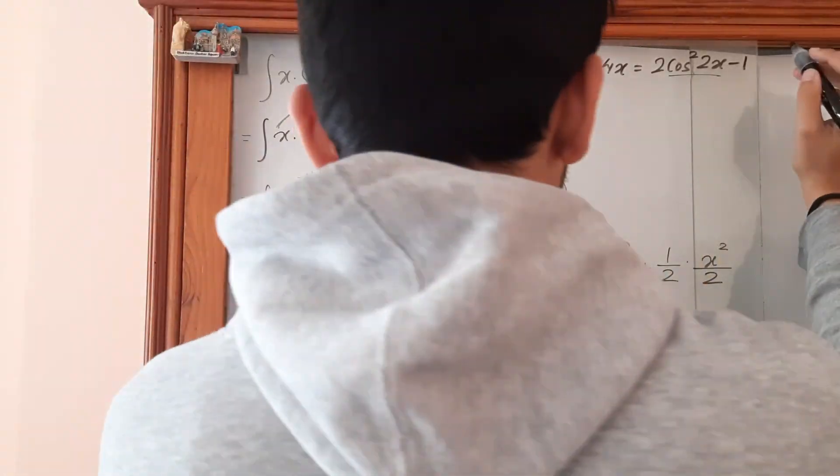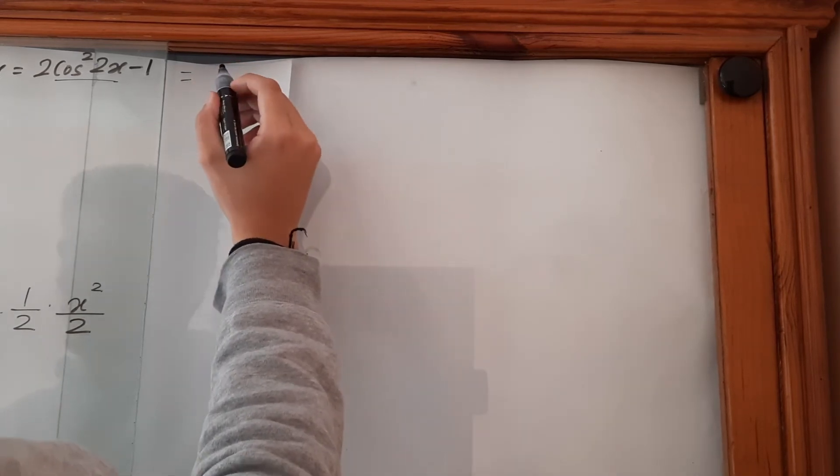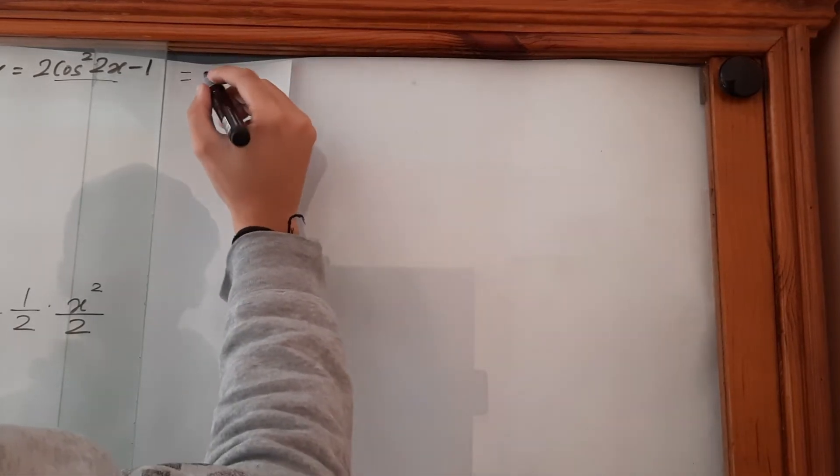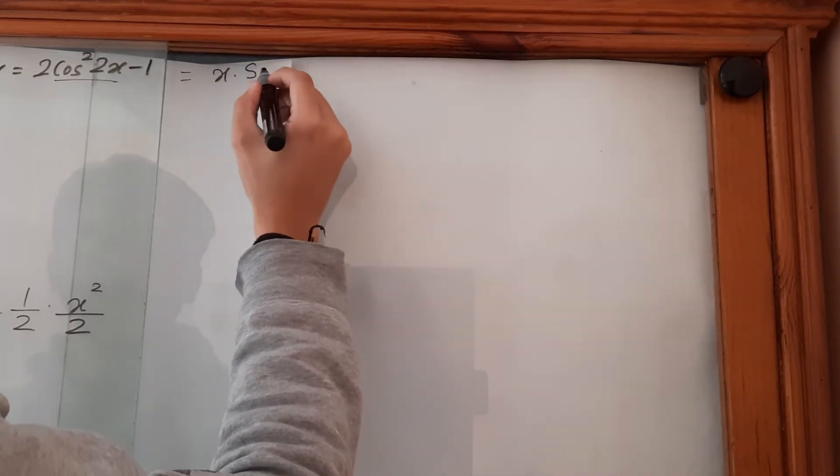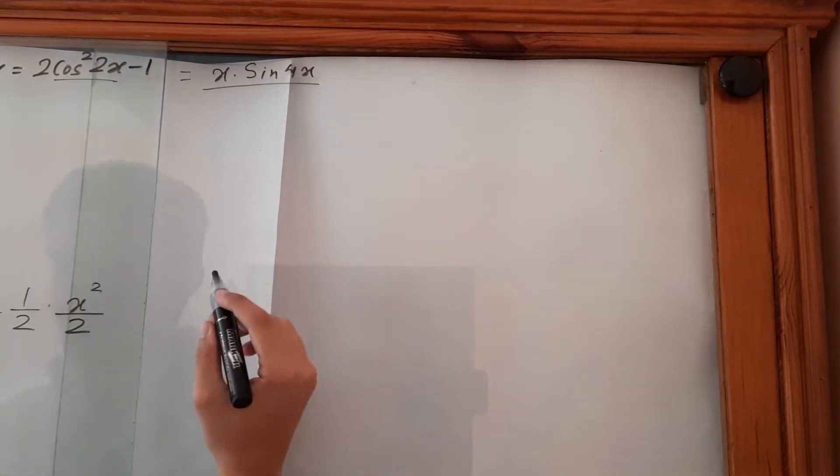Now let's multiply the 1/2 through. It is x·sin(4x)/(4×2), which is x·sin(4x)/8.